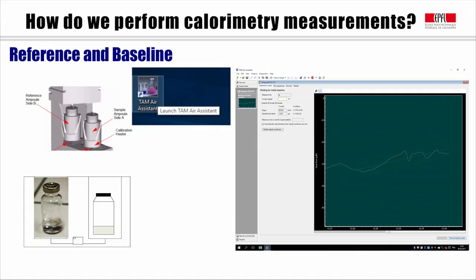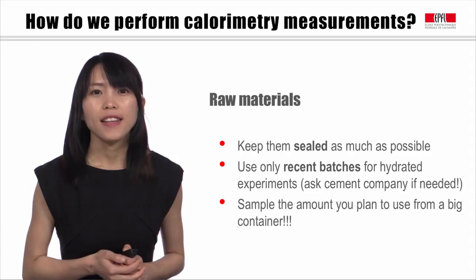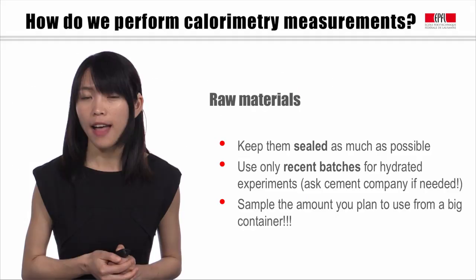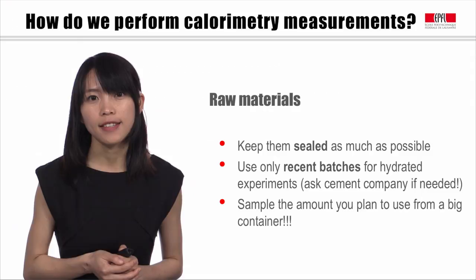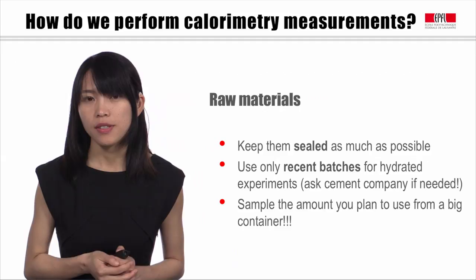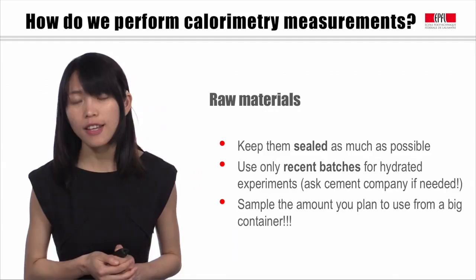Now, it's the time to prepare our samples. In order to get reasonable results for calorimetry, keeping representative raw materials is critical. We need to avoid phase change due to carbonation or humidity. Briefly, three suggestions can be used for getting good raw materials. Keep materials sealed, use only recent batches, and sample the amount you plan to use from a big container to avoid always opening the big container.